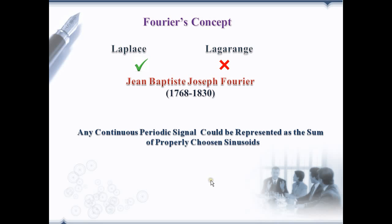Who was correct — Fourier or Lagrange? Both were partially correct. Lagrange was correct in his claim because summation of sinusoids cannot form a signal with a corner, that is, signals with discontinuities. However, we can get very close if enough sinusoids are used, but it will not be sufficient to produce the square wave exactly. This effect is known as Gibbs phenomenon.